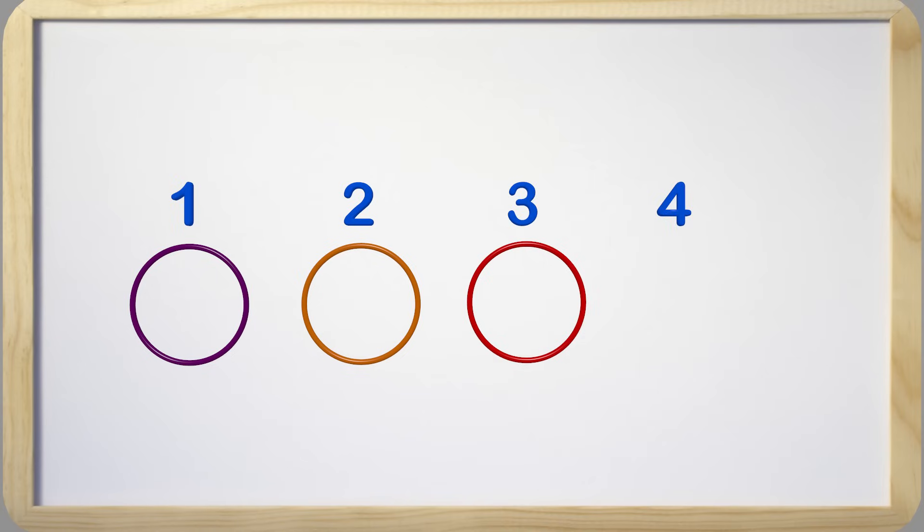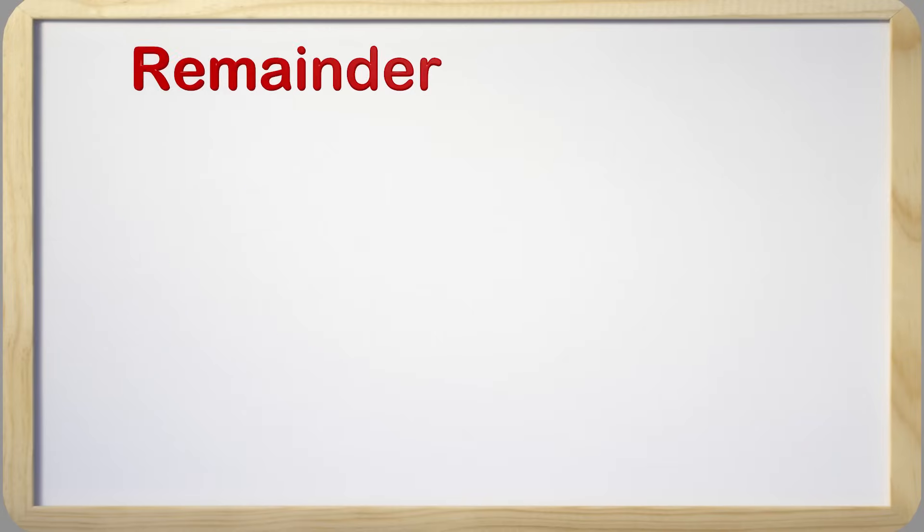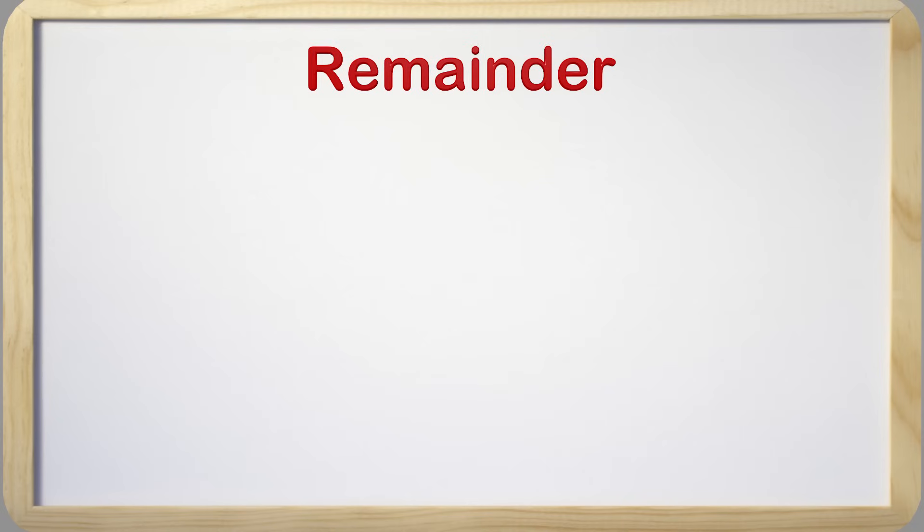Just like this situation, division does not always come out equal, and that is when we have what we call a remainder. A remainder is the number left over after dividing two numbers that cannot be evenly divided.